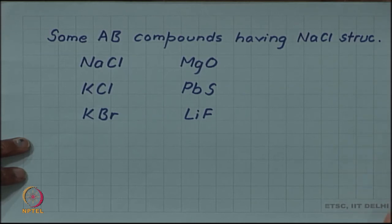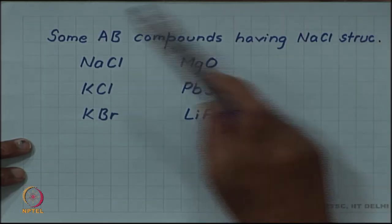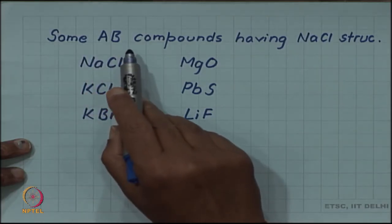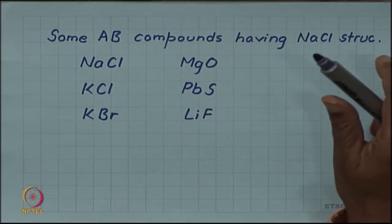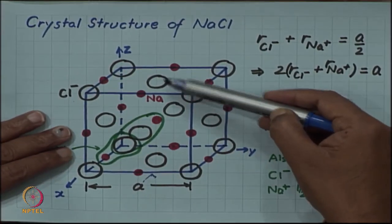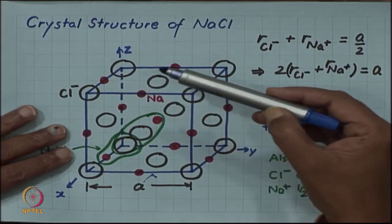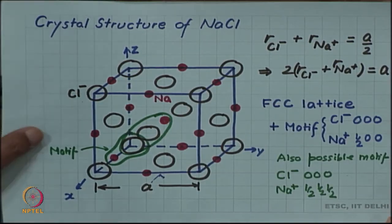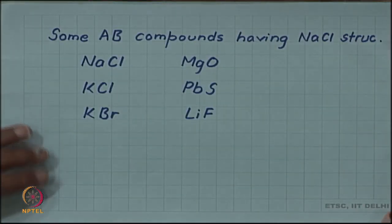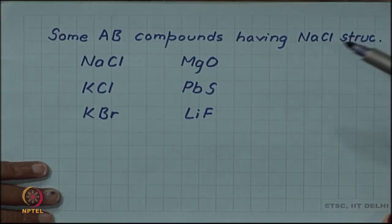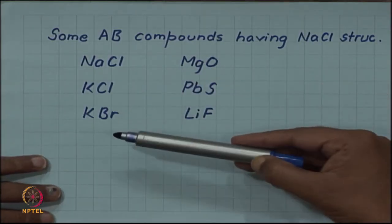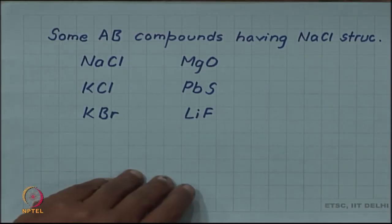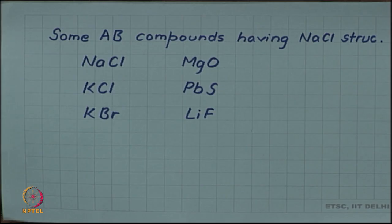It should be noted that sodium chloride structure is not just the structure of sodium chloride, but a prototype structure. Any AB compound where A is a cation and B is an anion - any such equi-atomic compound which has this structure, where cube corners and face centers are taken by anions and edge centers and body centers are taken by cations - will be called a sodium chloride structure. Many such compounds exist, for example: magnesium oxide, potassium chloride, lead sulfide, potassium bromide, and lithium fluoride. This is only a partial set.